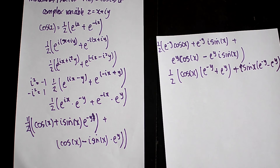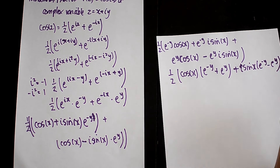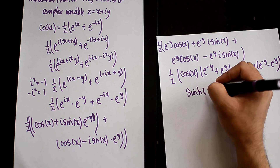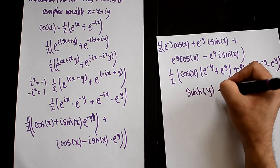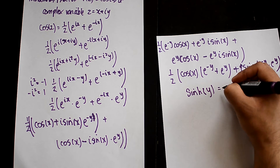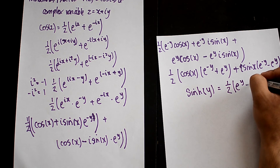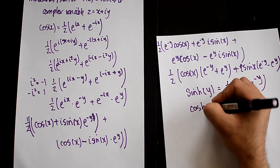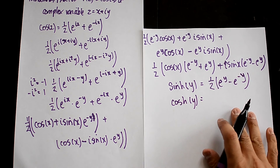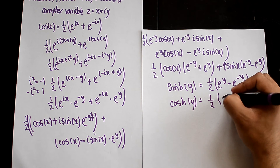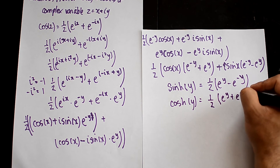We now have another formula that can be used. You should know that sinh y equals one half of e^(y) minus e^(-y), and cosh y equals one half of e^(y) plus e^(-y). So we now have these two hyperbolic identities.